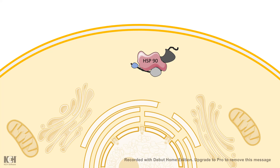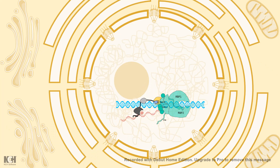The ligand is freely diffusible through the membrane and can enter the cell. At resting state, there are two kinds of intracellular receptors. One resides in the cytoplasm in an inactivated state stabilized by heat shock protein 90 (HSP90). When the ligand enters the cytosol and binds, HSP90 dissociates, and the ligand-bound receptor translocates into the nucleus, where it interacts with RNA polymerase and general transcription factors, leading to transcriptional activation.